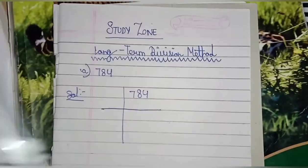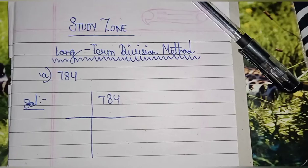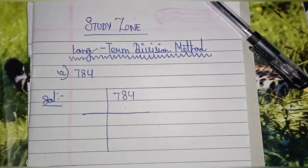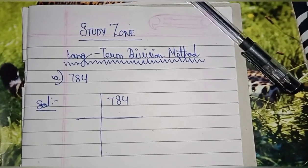First, you have to take any number. I have taken here 784. Then you have to group the digits in pairs, starting with the digit in the unit place. Each pair and the remaining digit is called a period.